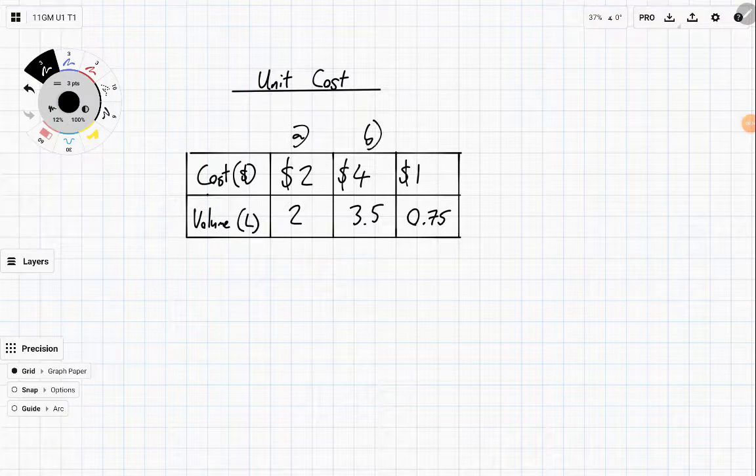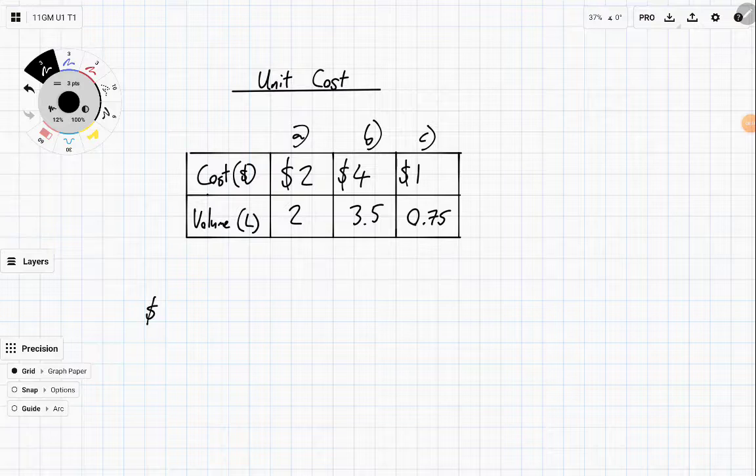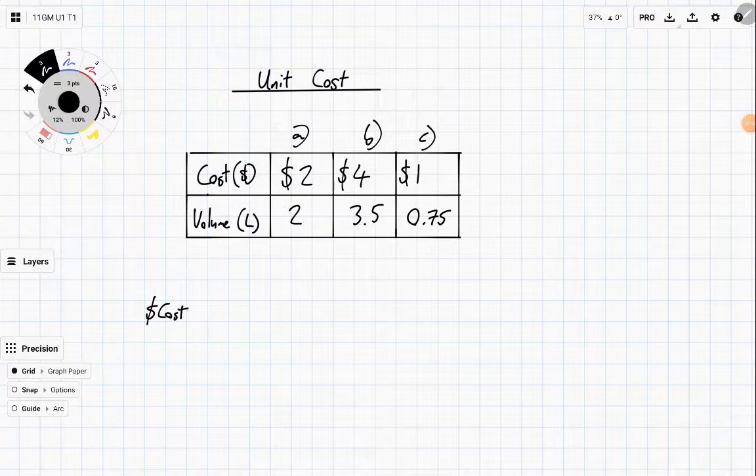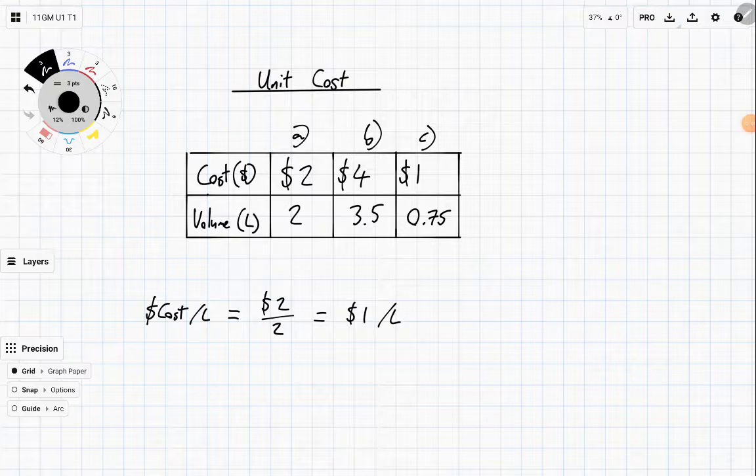So for A, B and C, the cost per litre for the first one is going to be $2 divided by 2, which means that it is $1 per litre. Remember we write this slash symbol to mean per.